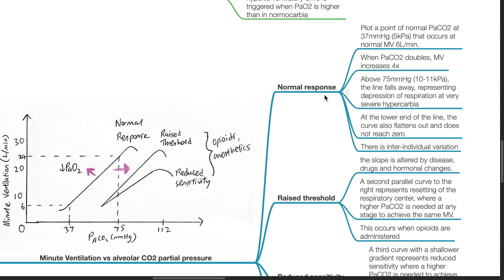Normal response curve. First, plot a point of normal PaCO2 at 37 mmHg that occurs at normal minute ventilation of 6 liters per minute.